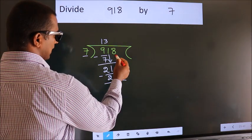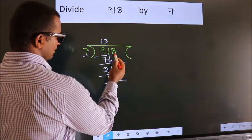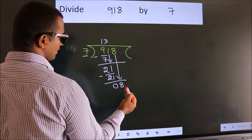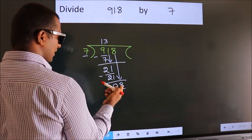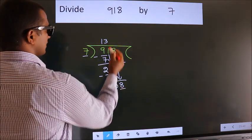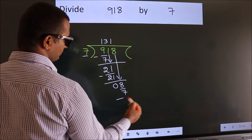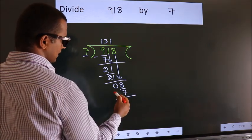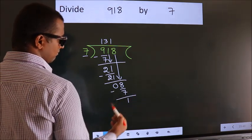After this, bring down the beside number. So 8 down. So 8. A number close to 8 in 7 table is 7 1s 7. Now we subtract. We get 1.